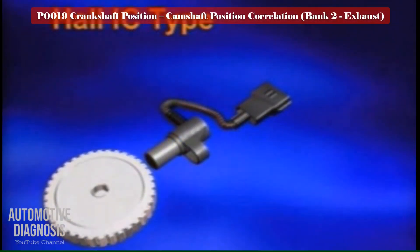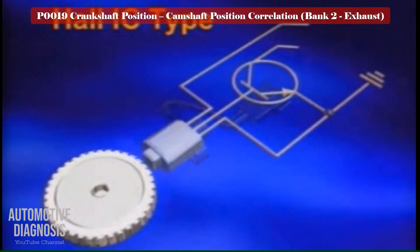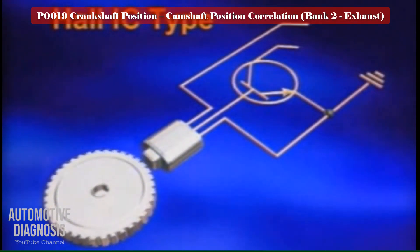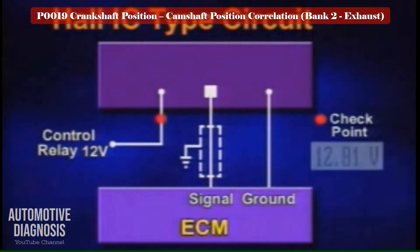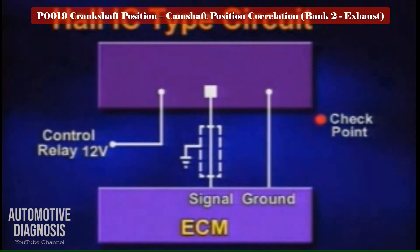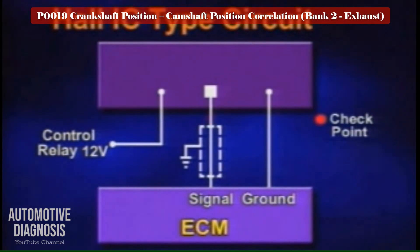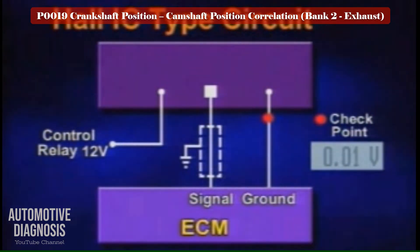If you have the hall IC type, the procedure for testing the sensor is similar to the camshaft position sensor — check the power supply, signal, and ground. If both sensors are good, go to the next step to test the bank 2 exhaust VVT.